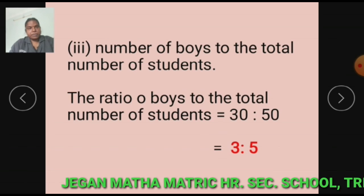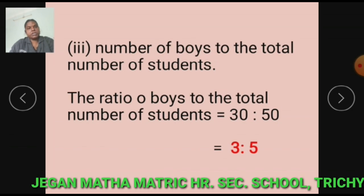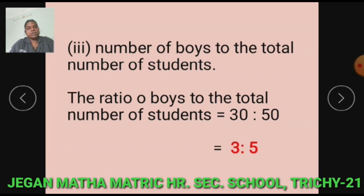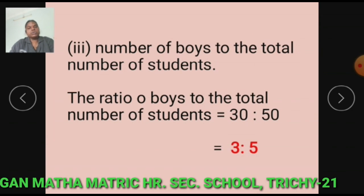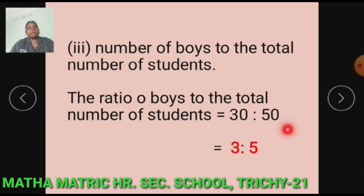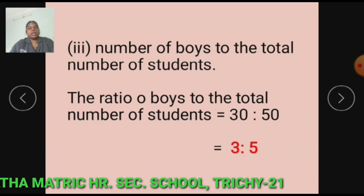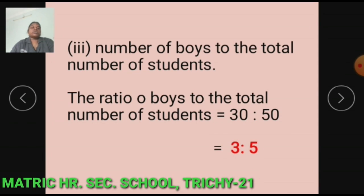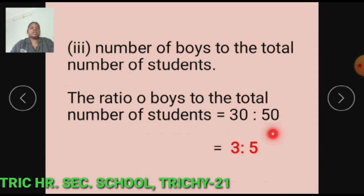Subdivision 3: Number of boys to the total number of students equals 30 is to 50. 30 and 50 are simplified by 10, so we get 3 is to 5. The ratio of boys to the total number of students equals 3 is to 5.